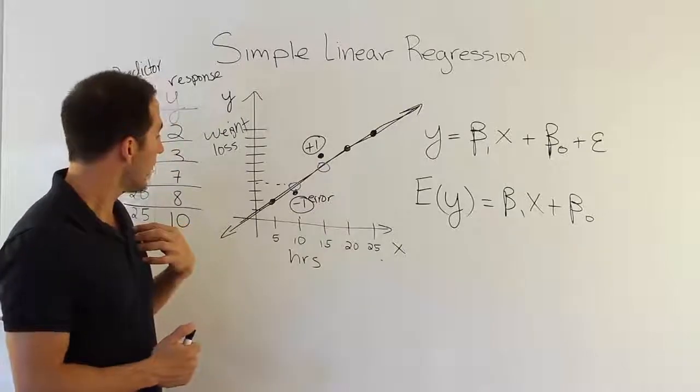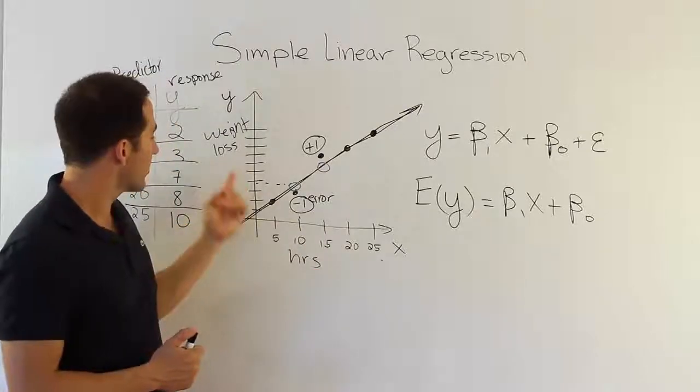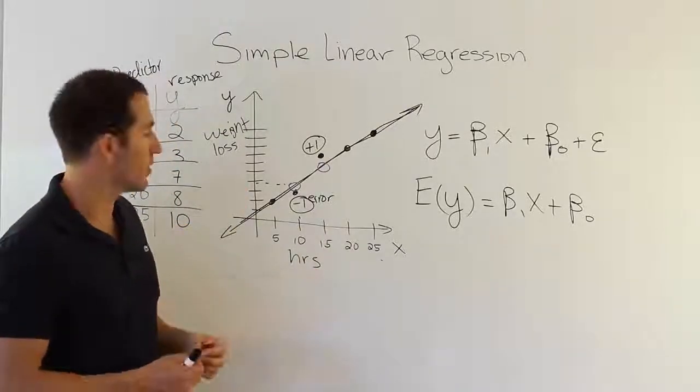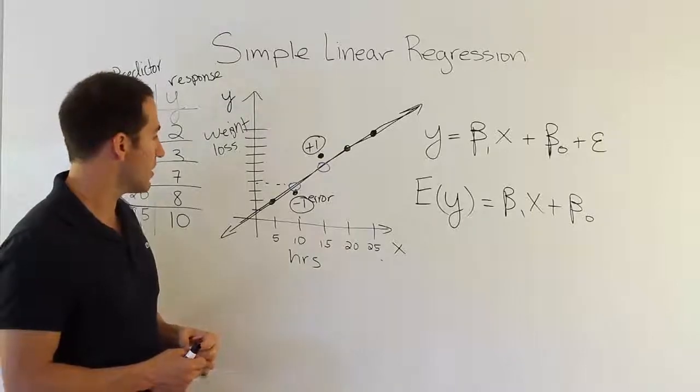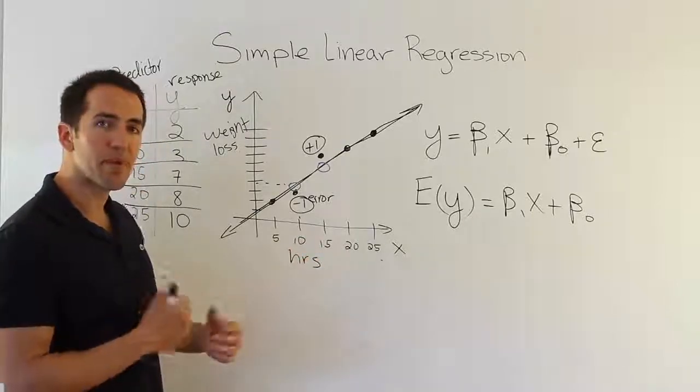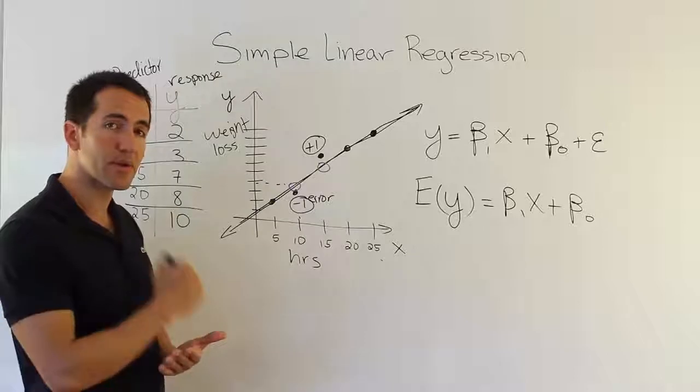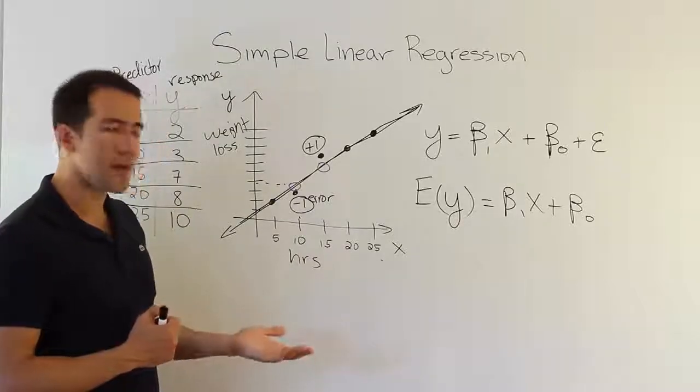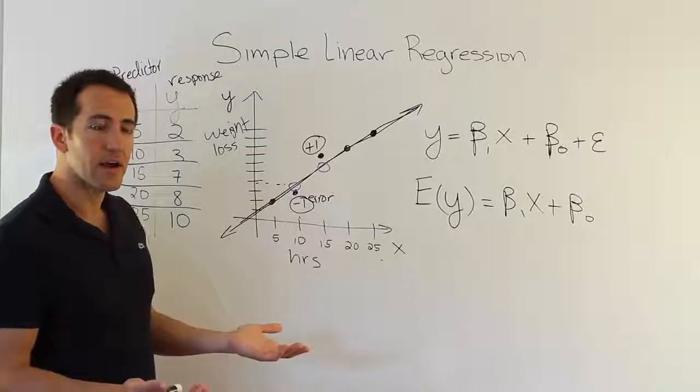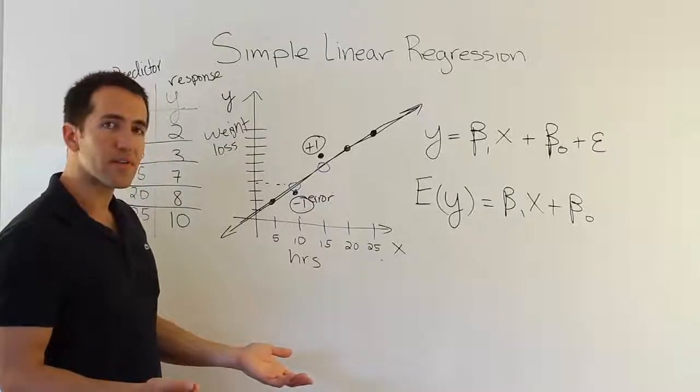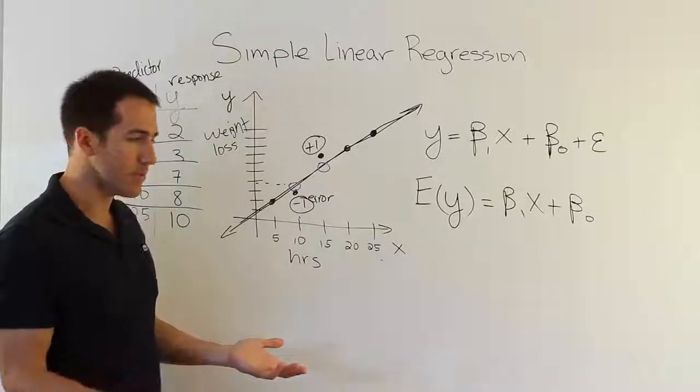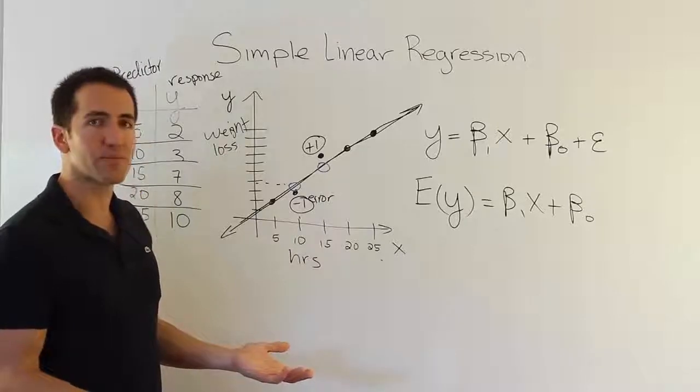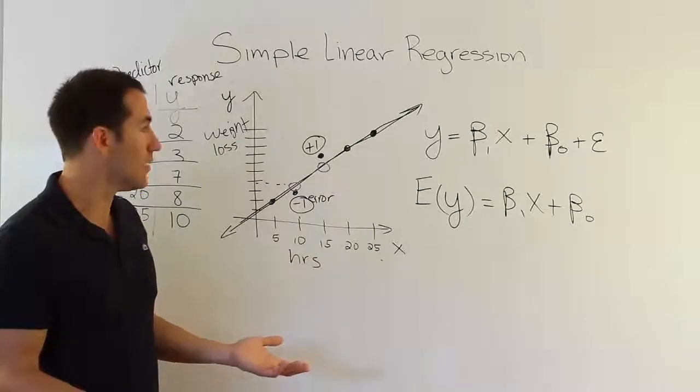In other words, I'm trying to predict weight loss based on hours spent on a treadmill. But is that really going to be perfect? Is there going to be a perfect connection between hours on a treadmill and weight loss? I don't think so. Because what if one guy spends the same amount of time on his treadmill as another guy, well, one of them eats Dunkin' Donuts three times a day, and the other one eats only vegetables and fruit and lean protein?